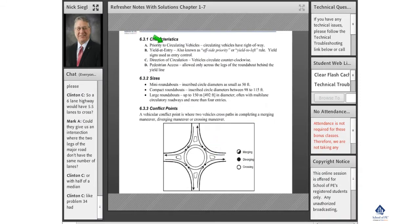Some of the basic characteristics of a modern roundabout include priority to the circulating vehicles. Circulating vehicles have the right-of-way, in other words you have to yield at entry, also known as the off-side priority or yield to left rule, as opposed to yield to the right which is what we're accustomed to. The direction of circulation is in a counterclockwise direction.